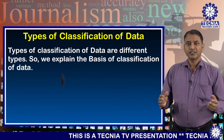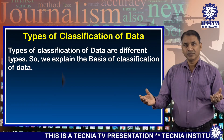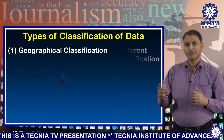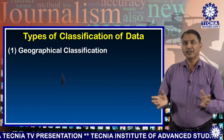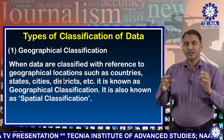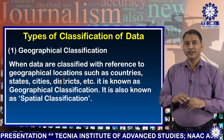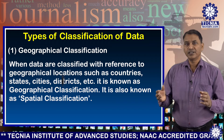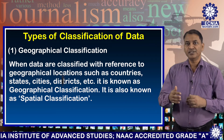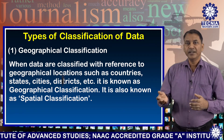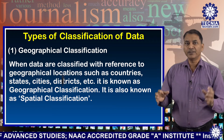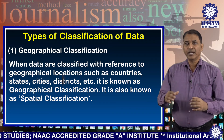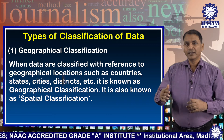Types of classification of data are of different types. We explain the basis of classification of data. Number one: geographical classification. When data are classified with reference to geographical locations such as countries, states, cities, districts, etc., it is known as geographical classification. It is also known as spherical classification.